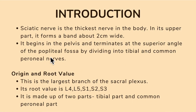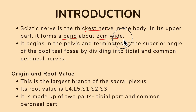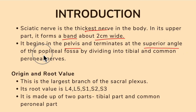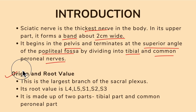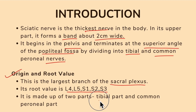To summarize: the sciatic nerve is the thickest nerve in the body, forming a band about 2 cm wide in its upper part. It begins in the pelvis and terminates at the superior angle of the popliteal fossa by dividing into the tibial and common peroneal nerves. It is the largest branch of the sacral plexus with root value L4, L5, S1, S2, S3, made up of the tibial and common peroneal parts.